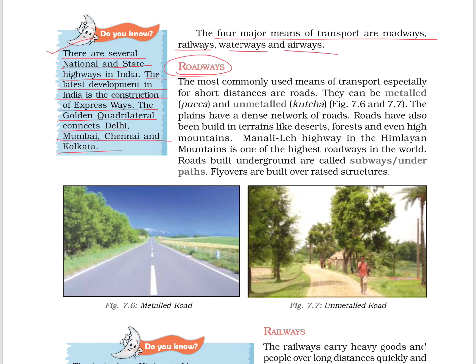The most commonly used means of transport, especially for shorter distances, are roads. They can be metalled and unmetalled — that is, pucca roads and kachcha roads. The plains have a dense network of roads. Roads have also been built in terrains like deserts, forests, and even high mountains. The Manali-Leh Highway in the Himalayan mountains is one of the highest roadways in the world.